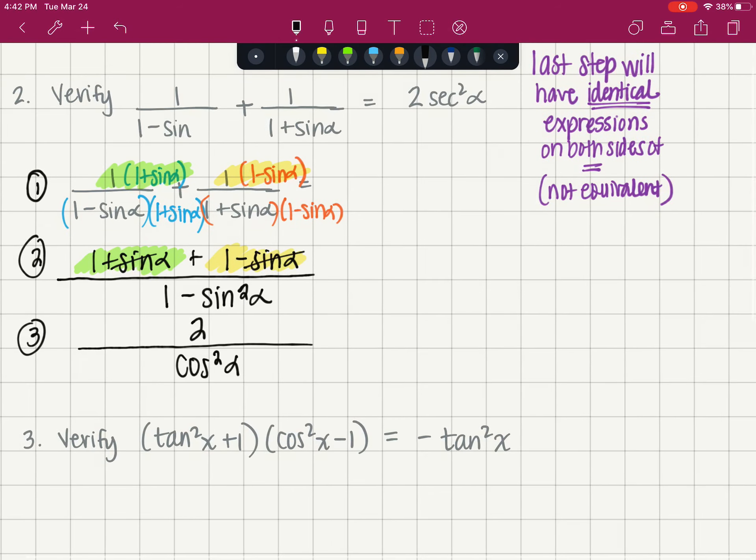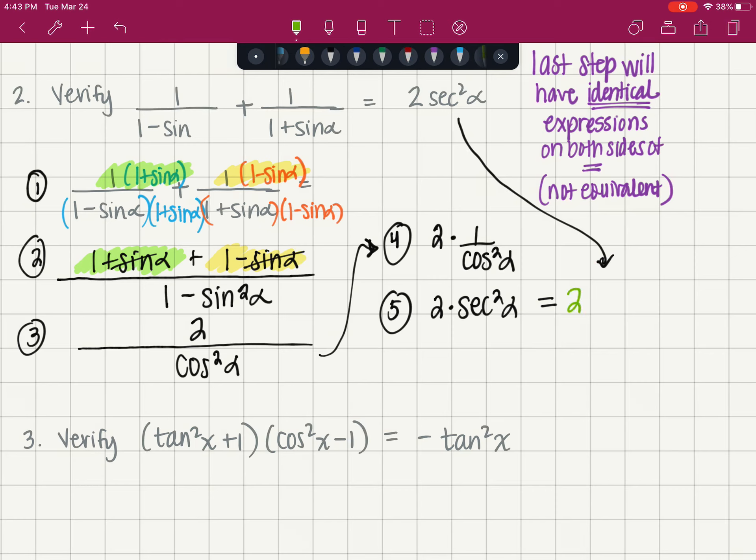One plus sine plus one minus sine is simply two, because the sines cancel out. And then step four, and this is why we number our steps, so that if we need a little bit more room, we can go off to the side. Step four is going to be two times one over cosine squared of alpha. And then step five is two times secant squared of alpha, which is equal to two secant squared of alpha. They look identical, therefore we have verified that we have an identity. The left-hand side is the same exact value as the right-hand side. We've proven that.